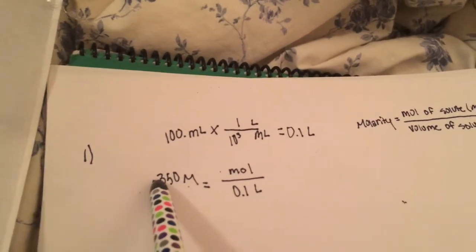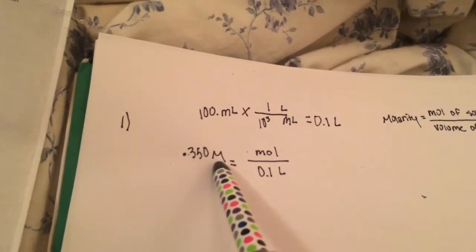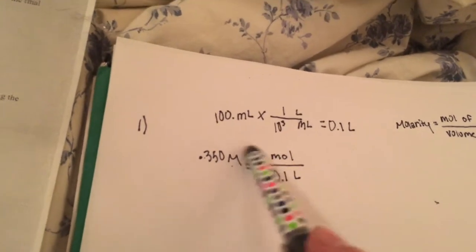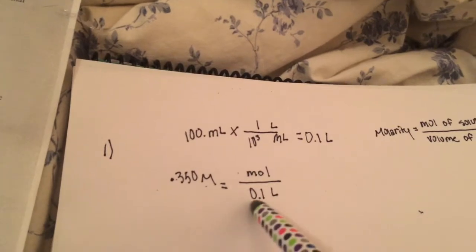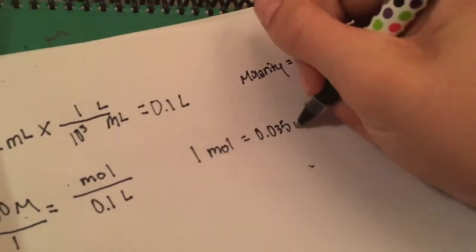We have to set up the equation. Since we have the molarity, I put 0.350 molarity here equals mol, since we don't know it, over 0.1 liters. Now we just have to cross multiply to get 0.35 moles.